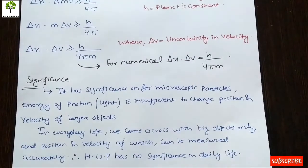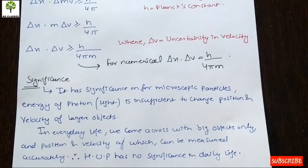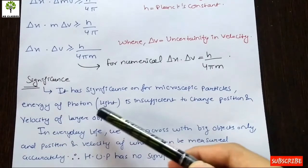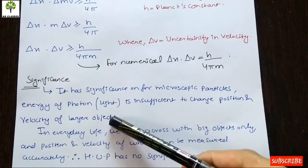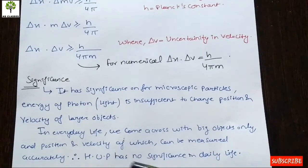The significance of the Heisenberg Uncertainty Principle applies to microscopic particles. When we talk about everyday life, it has no significance because in everyday life we deal with bigger objects. The light energy involved is so low that it is insufficient to change the position and velocity of a larger object.